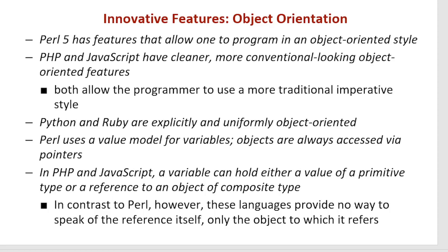Perl 5 has features that allow one to program in an object-oriented style. PHP and JavaScript have cleaner, more conventional-looking object-oriented features. Both allow the programmer to use a more traditional embedded style. Python and Ruby are explicitly and uniformly object-oriented. Perl uses a value model for variables, and objects are always accessed via pointer. In PHP and JavaScript, a variable can hold either a value of a primitive type or a reference to an object of a composite type.